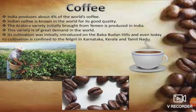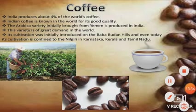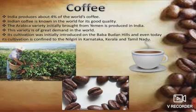India produces about four percent of the world's coffee. Indian coffee is known for its good quality. The Arabica variety, initially brought from Yemen, is produced in India and is in great demand worldwide. Its cultivation was initially introduced on the Baba Budan Hills, and even today it is confined to the Nilgiris in Karnataka, Kerala and Tamil Nadu. So far we have discussed major food crops, three cropping seasons — Rabi, Kharif and Zaid — and some non-food crops. More varieties of crops will be discussed in the next video.